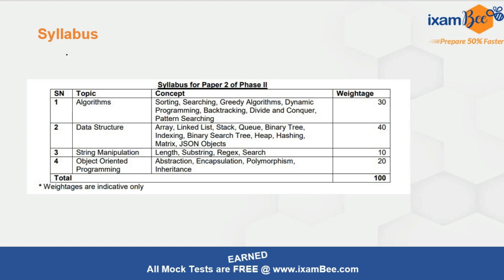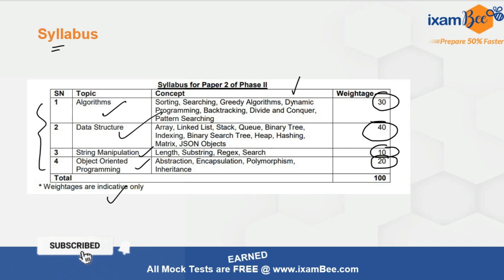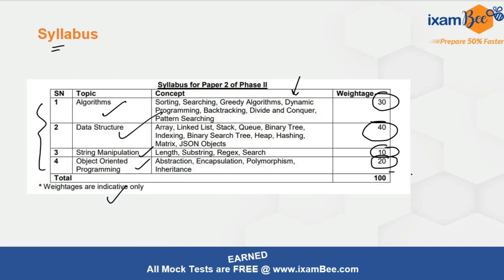Before that, let's first understand the syllabus. In the syllabus we have four things: algorithms, data structures, string manipulation, and object oriented programming. Data structures and algorithms have the highest weightage, which is indicative only, and then object oriented programming and string manipulation. Under this you have specific concepts that you have to learn, and by learning only these concepts you can get all hundred out of hundred marks.